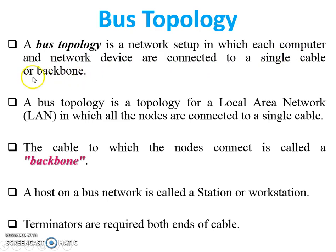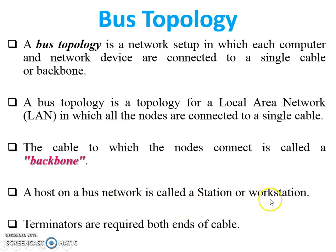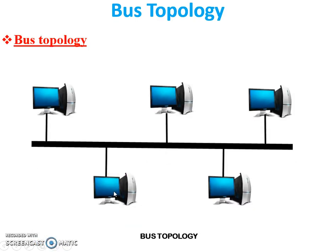Bus topology is a topology for a local area network in which all nodes are connected to a single cable. The single cable to which the nodes are connected is called the backbone cable or main cable. A host on a bus network is called a station or workstation. Terminators are required at both ends of the cable.